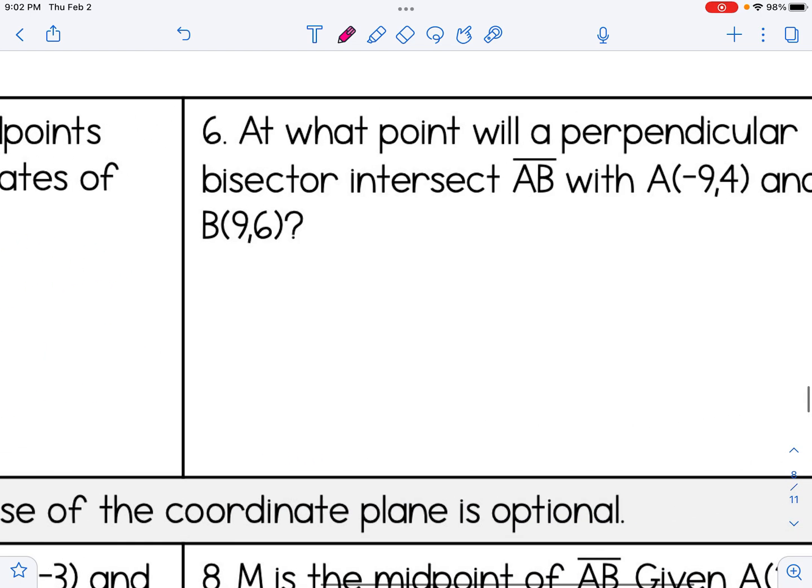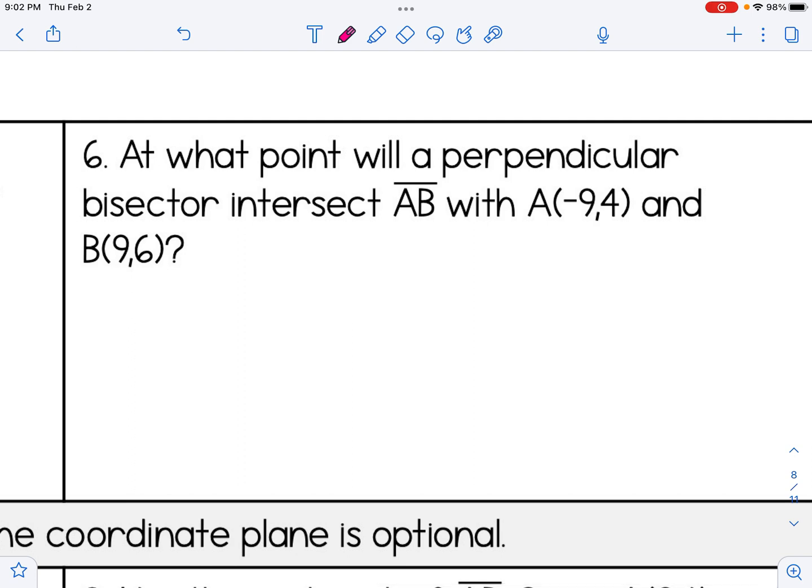In number 6, similar idea where the question looks different, but we're really just finding the midpoint again. It says, at what point will a perpendicular bisector intersect AB with A(-9, 4) and B(9, 6). Well, a bisector basically cuts through a segment at its midpoint. It also splits it into two congruent parts. So again, we're really just looking for the midpoint here. Add -9 and 9, divide by 2, add 4 and 6, divide by 2. So when we do that, (0, 5) becomes our midpoint of AB.